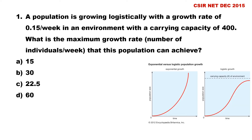There are two types of population growth: exponential growth and logistic growth. We already did one video on exponential and logistic growth — if you have any doubt, please go through that video; the link is in the upper right corner. When resources are unlimited, the population shows exponential growth, resulting in a J-shaped curve.